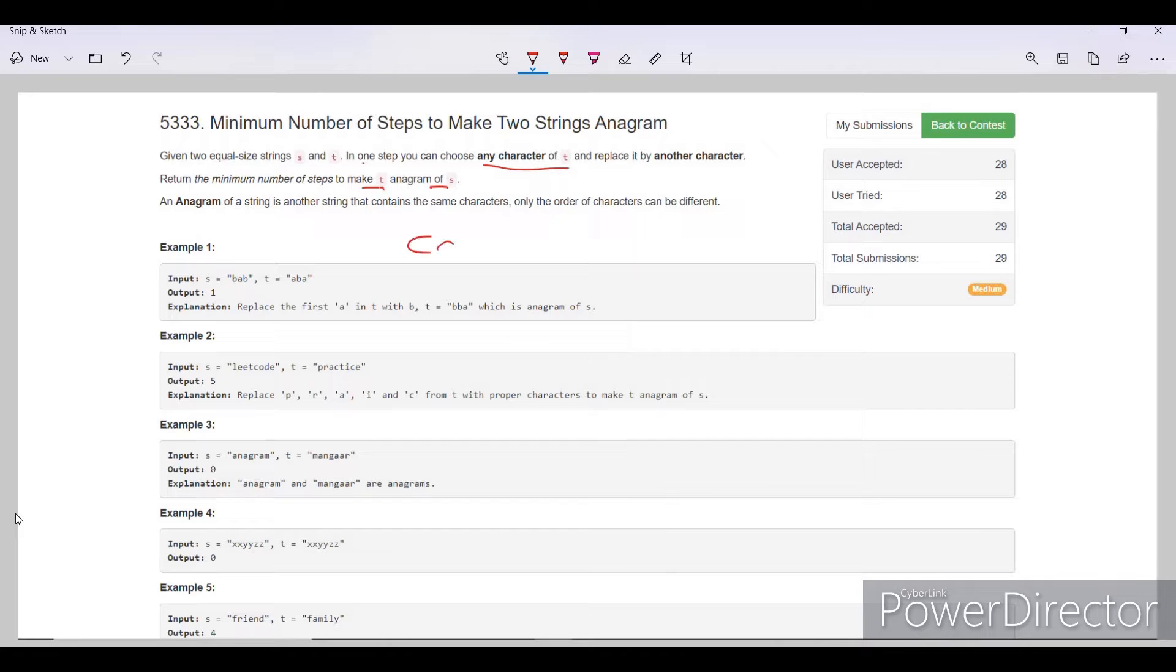For example, we have cat. Now cat is an anagram to ATC or we can say TAC, because all the characters in this and all the characters in these two are the same, only the order is different. So these are called anagrams.